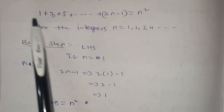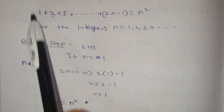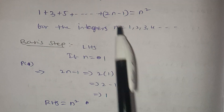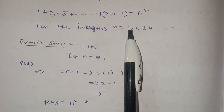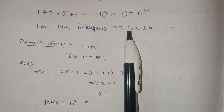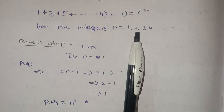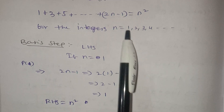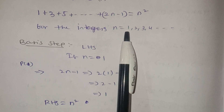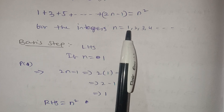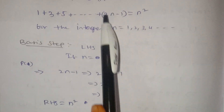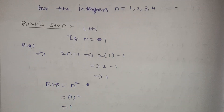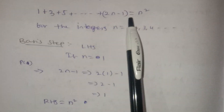LHS is the left-hand side, RHS is the right-hand side. First step: n equals 1. For the base case in mathematical induction, when n equals 1, LHS equals RHS.